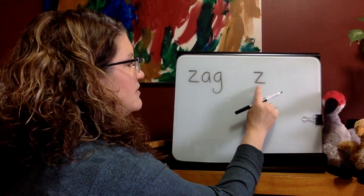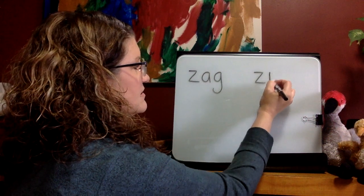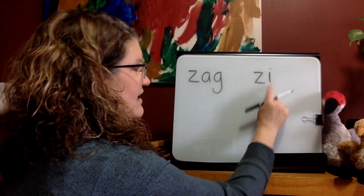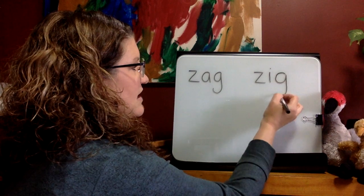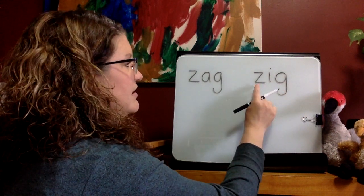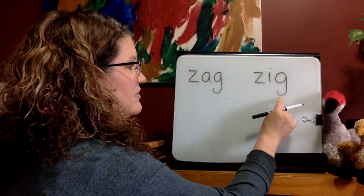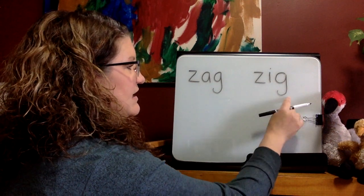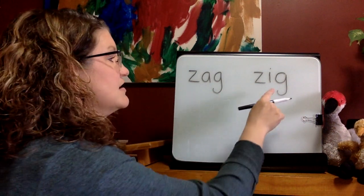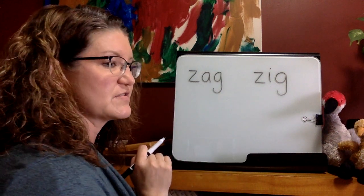Next word. Sound — yes, Z. Sound — yes, I. Sound — yes, G. Blend — 'zig.' Sometimes we hear people say 'zigzag.' Those are those two words together.